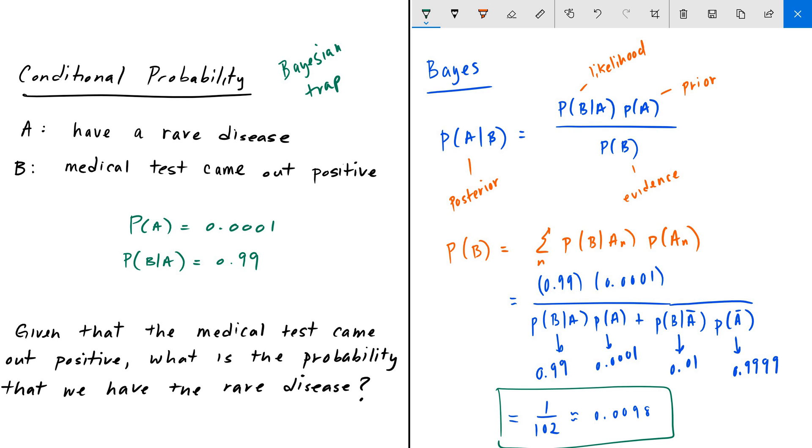It's called the Bayesian trap because it goes against our intuition. We know that rare diseases are rare, and so they will have a very small probability, which we do - the 0.0001. And we know that if we have this rare disease and the test comes out positive, it has an accuracy of 99%, so that is also very intuitively clear. But when we use Bayes' rule to determine the probability of having this rare disease, given that the test comes out positive, we get a very unintuitive answer, and we get 0.01.